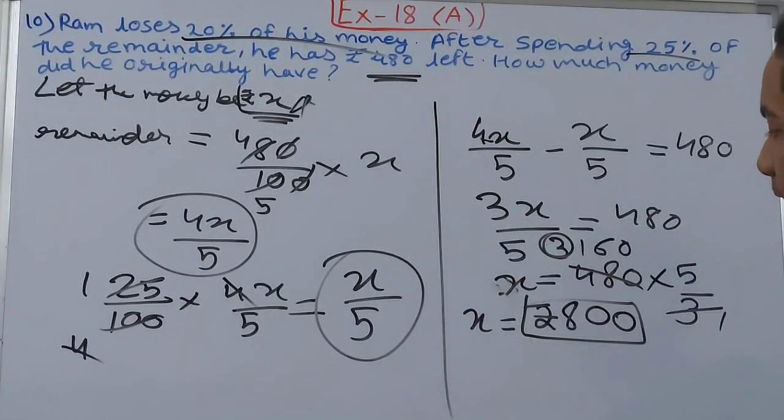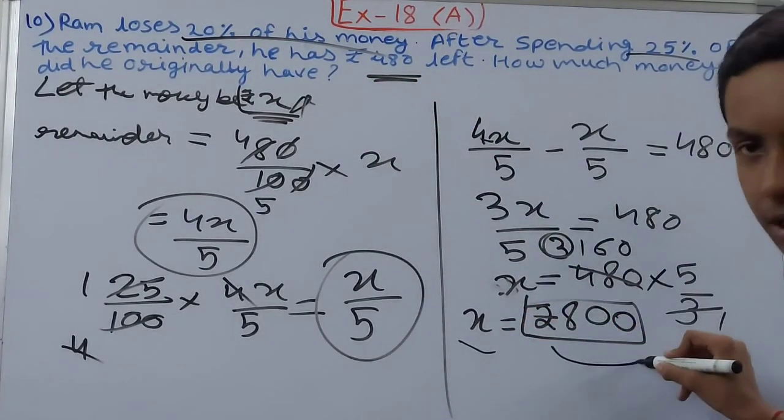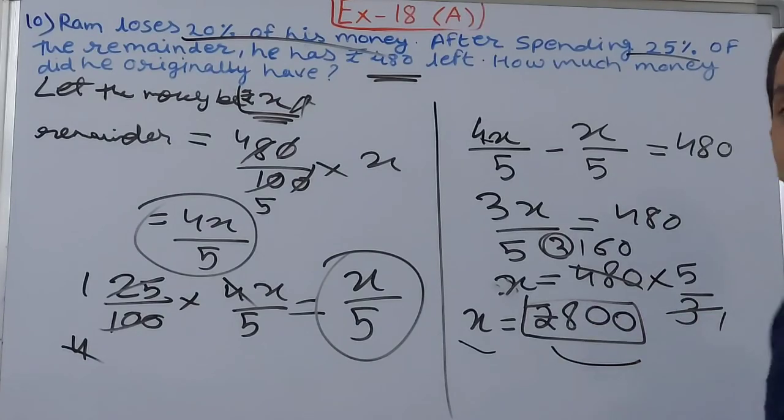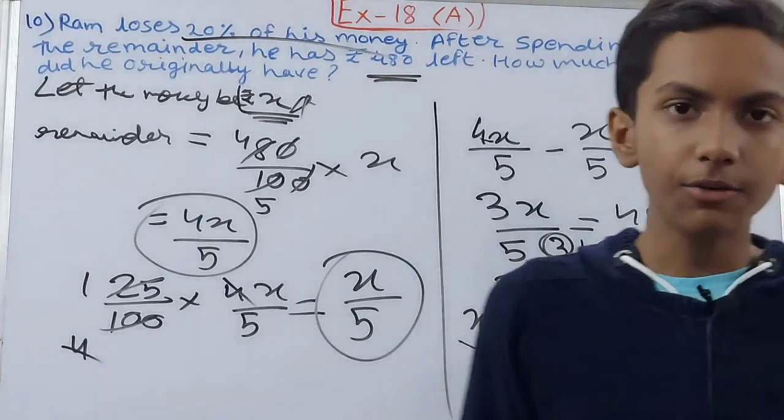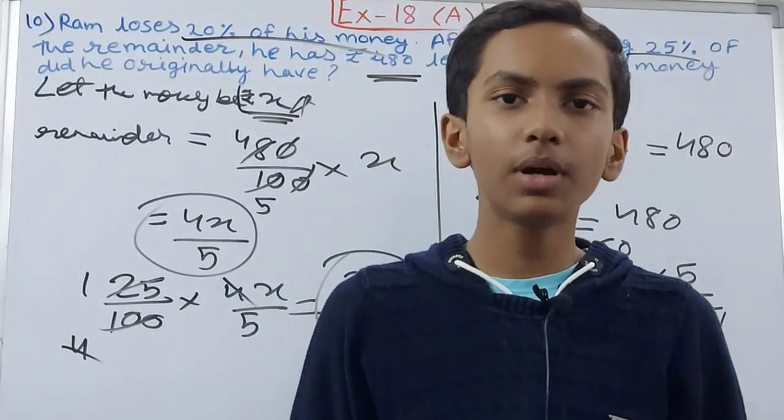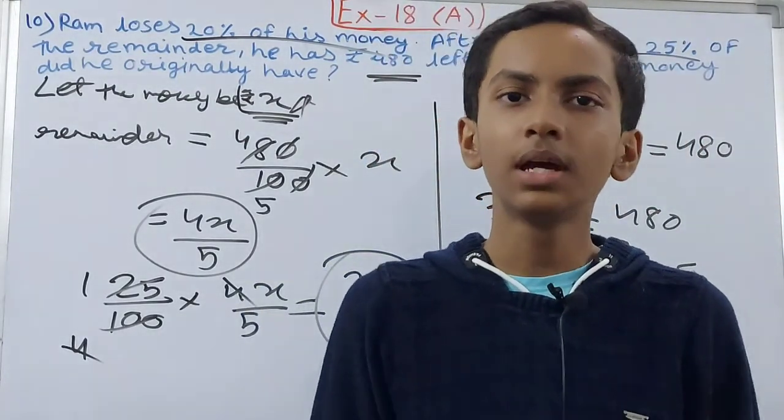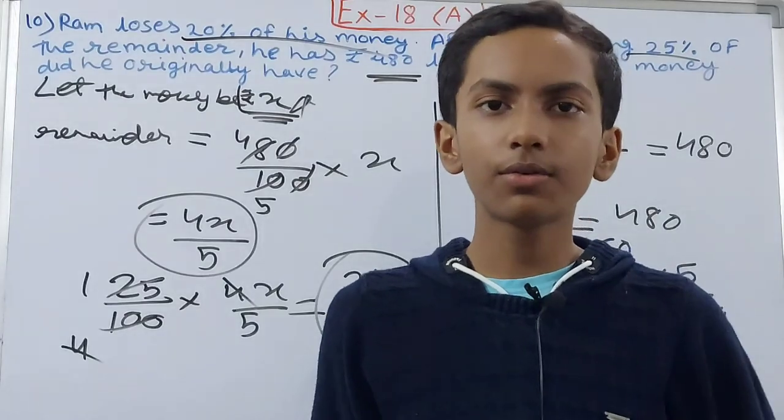Rupees 800. We have already assumed the total money as rupees x, and x equals rupees 800. This means the total money that he had was rupees 800. Friends, this is all for today. If you are new to my YouTube channel, do not forget to subscribe. Leave a like on this one. Till then, take good care of yourself and bye bye.